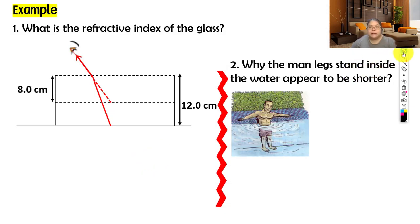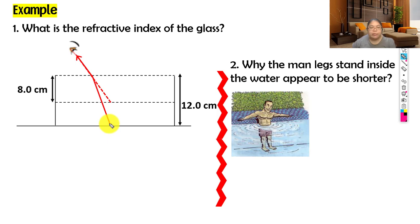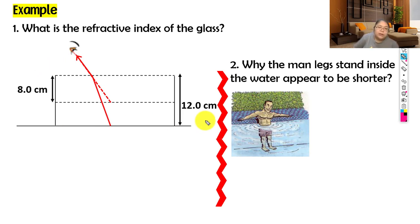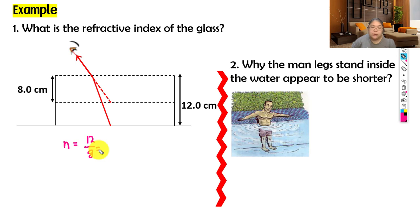Now some example questions. The diagram shows glass and we want to find the refractive index. Light travels from the bottom upward to the eye, so we identify the real depth and apparent depth. Apply the formula: n = real depth / apparent depth = 12 / 8 = 1.5. Remember, the refractive index has no unit, so leave it blank - the answer is 1.5.